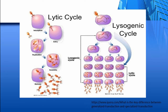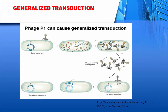Depending upon the type of phage, two types of transduction may occur: generalized and specialized. In generalized transduction, a lysogenic phage attaches to the host bacterial cell, and fragments of bacterial DNA from any region of the bacterial chromosome have a chance to enter into a transducing phage.